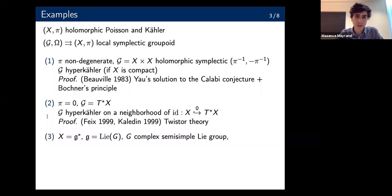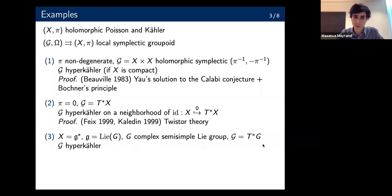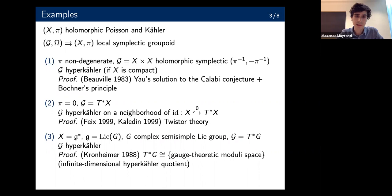Another famous example is when you take the dual of a complex semisimple Lie algebra — the groupoid integrating that is the cotangent bundle of the group, where X appears as the fiber at the identity element. This is also hyperkähler. The proof is due to Kronheimer in 1988, obtained by a diffeomorphism between this cotangent bundle and some gauge-theoretic moduli spaces, which can be viewed as an infinite-dimensional hyperkähler quotient.